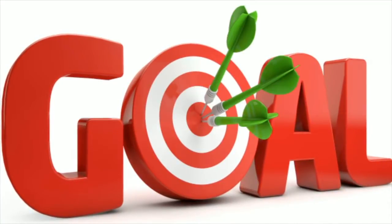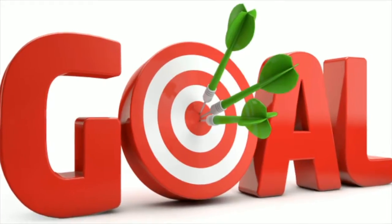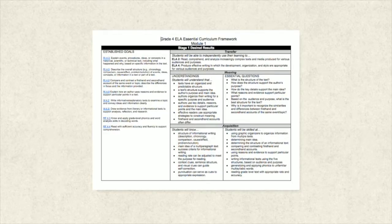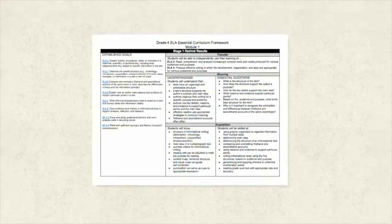Within the WCPS Essential Curriculum, these can be identified in Stages 1 and 2. Stage 1 communicates the desired results as acquisition, meaning, and transfer goals. The meaning section provides a list of understandings and essential questions that are helpful when identifying learning goals for an upcoming instructional unit. These questions can be asked of students multiple times within instruction, giving the teacher evidence of where students are in progress towards the learning goals.